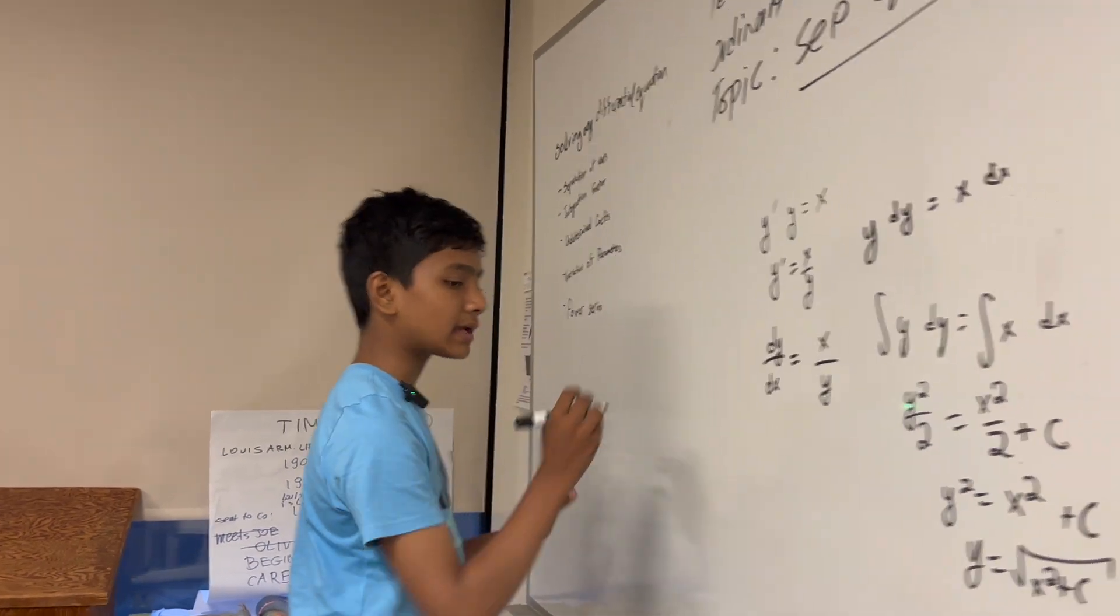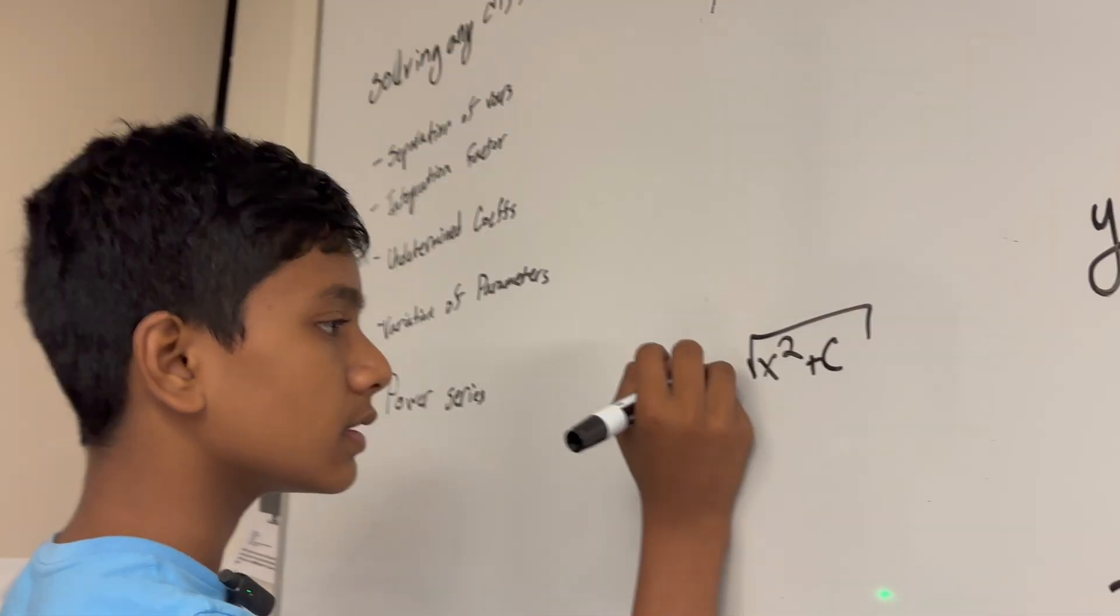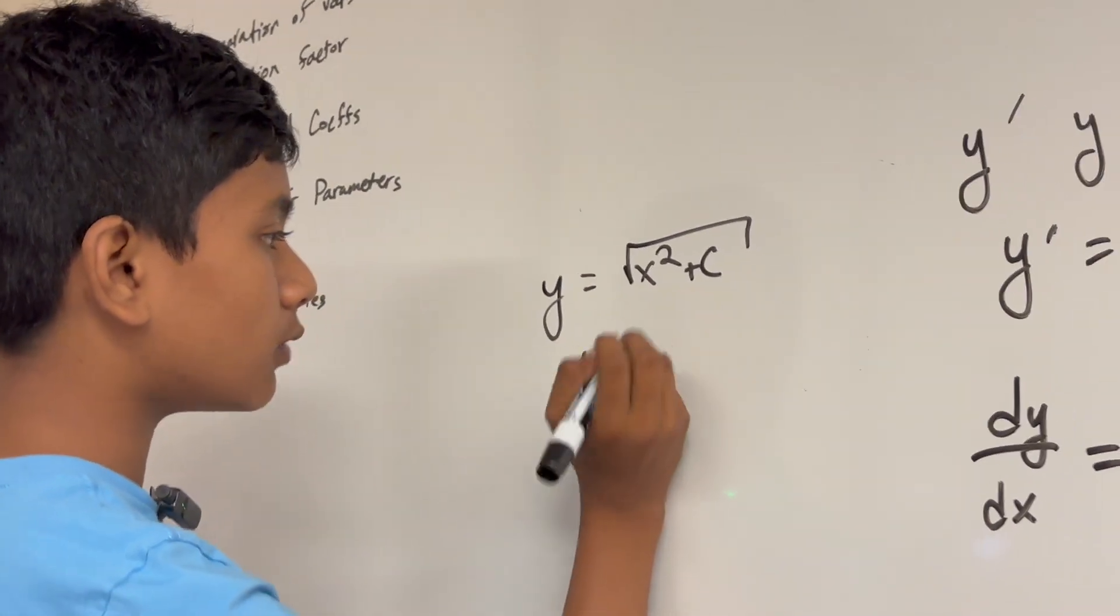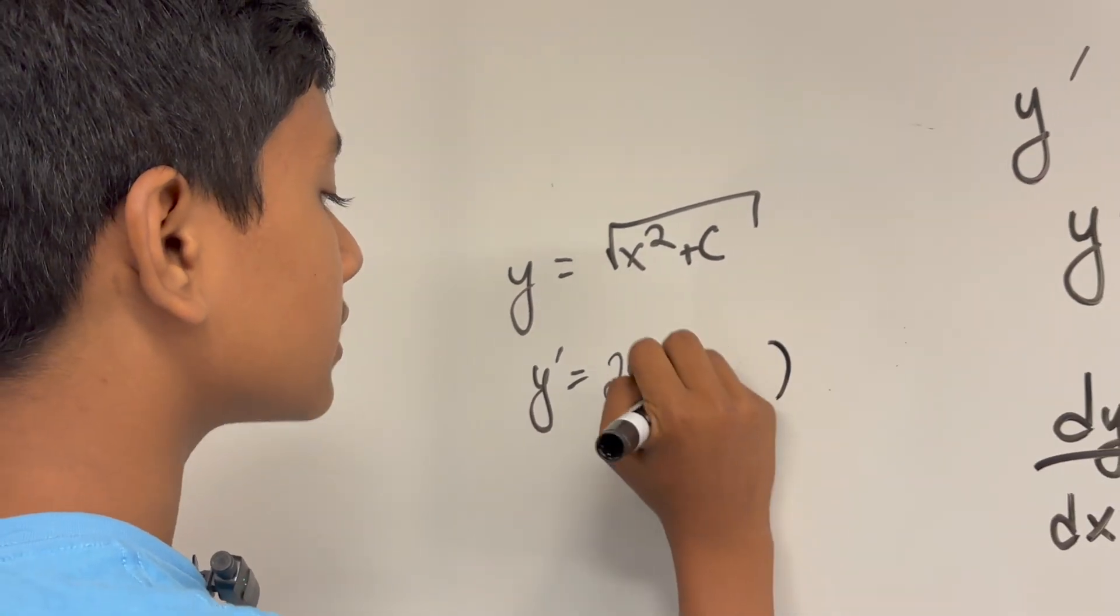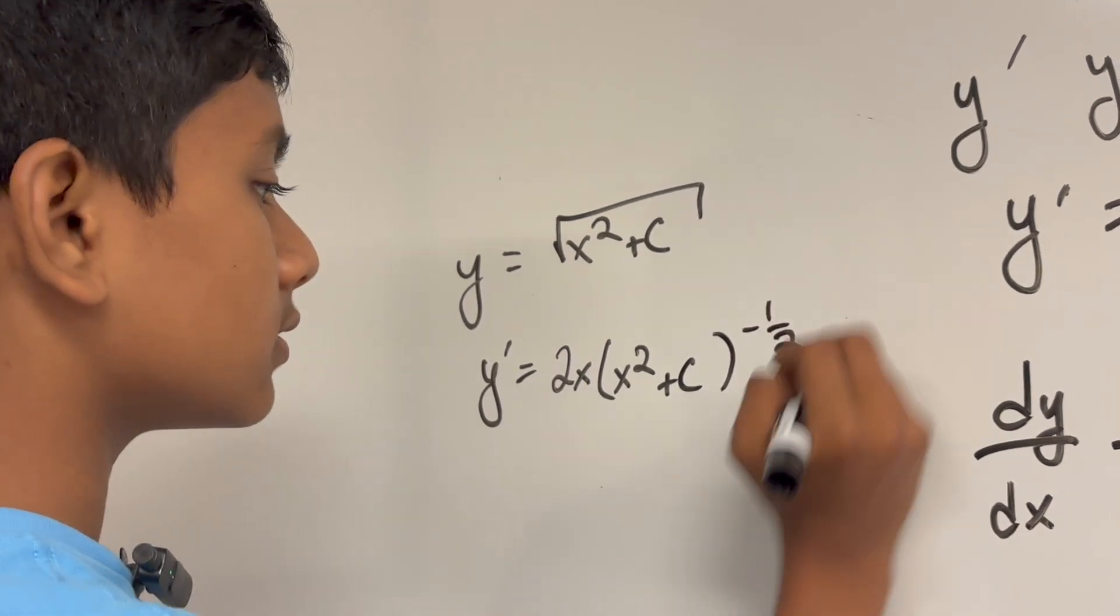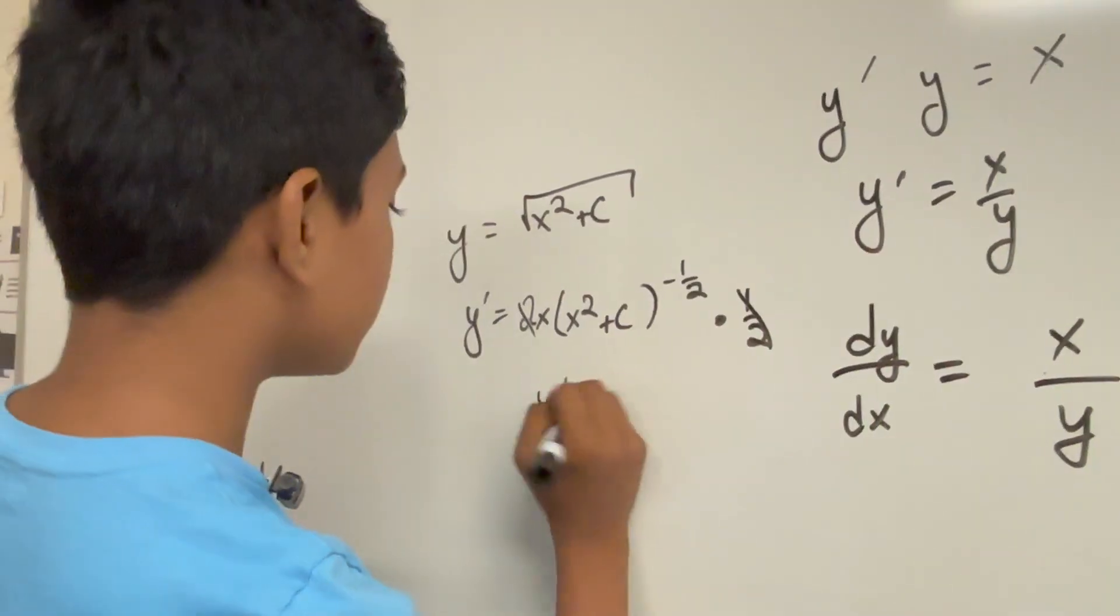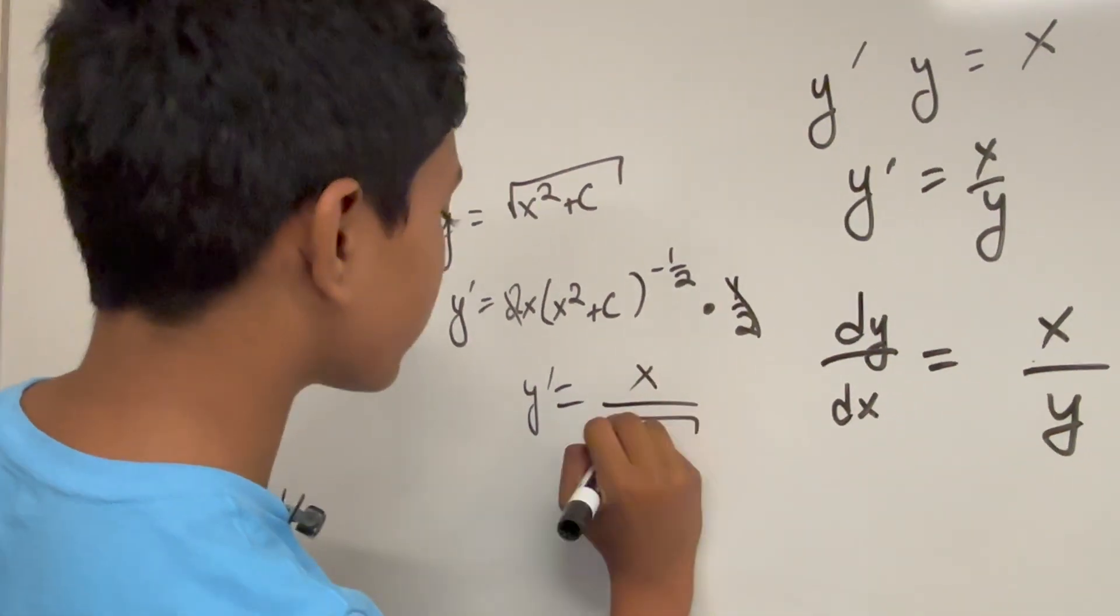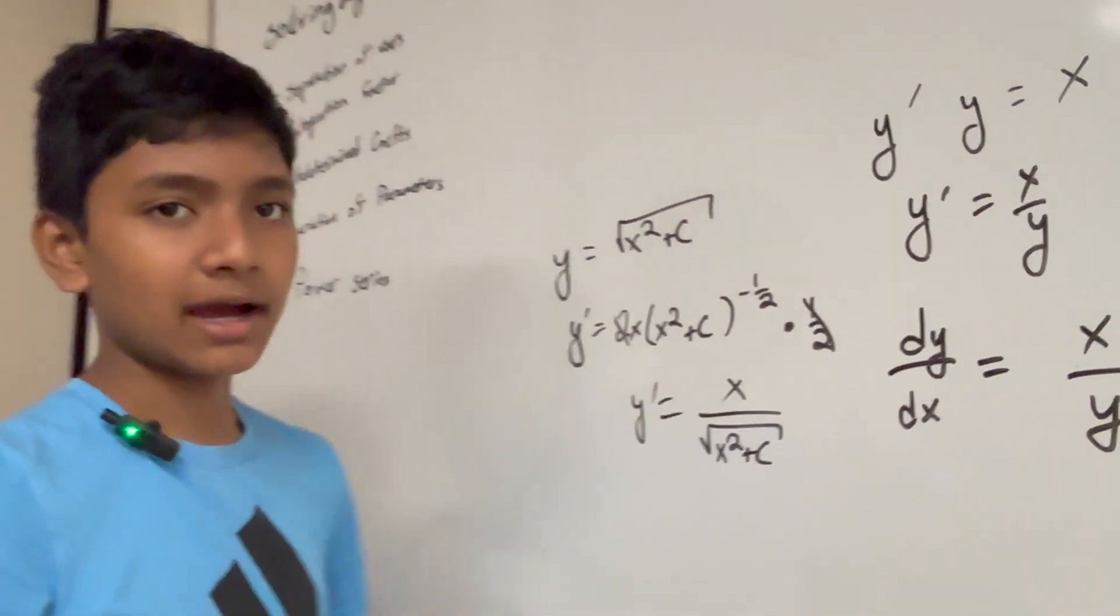So what happens if we actually plug that back in? Well, if this is true, that means y prime equals, by the chain rule, 2x times x squared plus c to the negative one-half times one-half, which means these actually cancel out, and we get y prime equals x over the square root of x squared plus c, which checks out very easily.